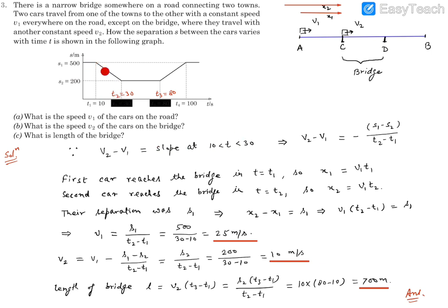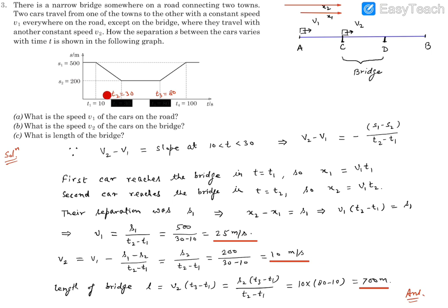The slope can be easily measured from the diagram. We find that V2 minus V1 equals minus (S1 minus S2) divided by (T2 minus T1). This is the expression for relative velocity — a relation connecting V1 and V2. S1, S2, T1, and T2 are all known to us from the figure.